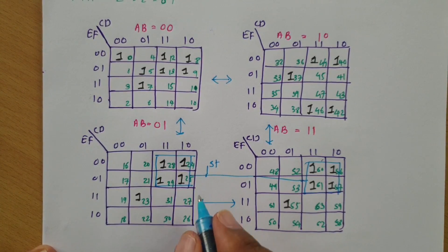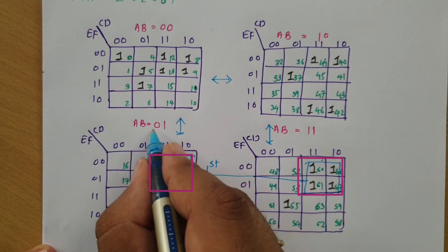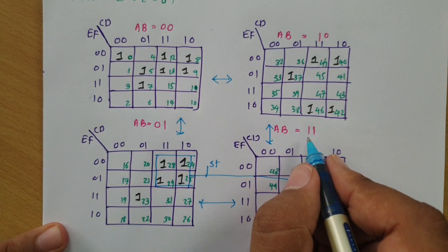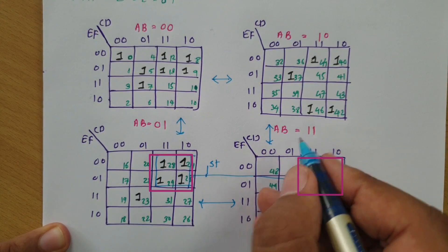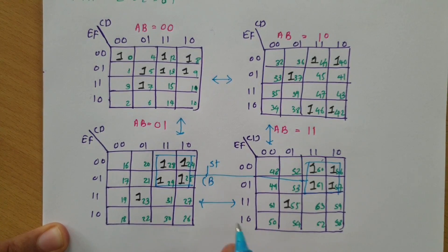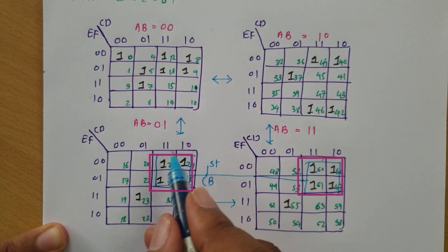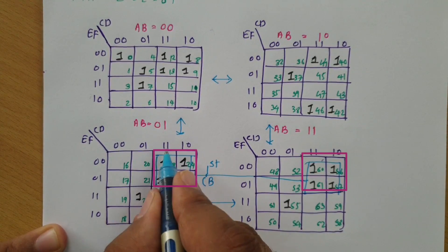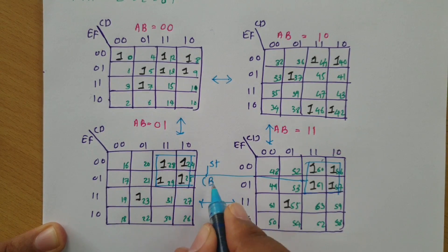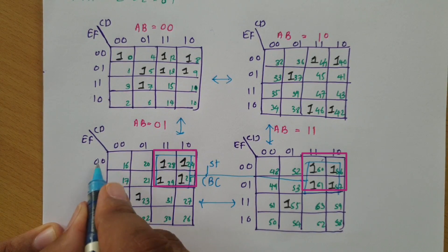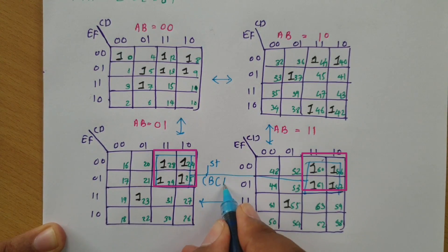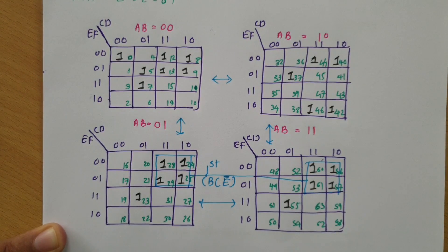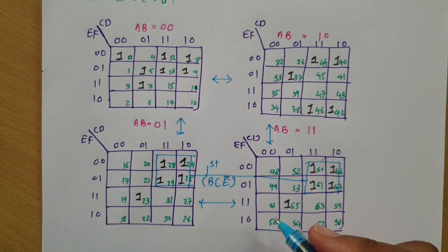In this first group, AB is 01 and 11, so B is 1 and A is changing — so B is common. Then observing CD: that is 11 and 10, so C is 1 and D is changing. For EF: 00 and 10, so E is 0 meaning E-bar. Therefore, the first group gives the term B·C·Ē.